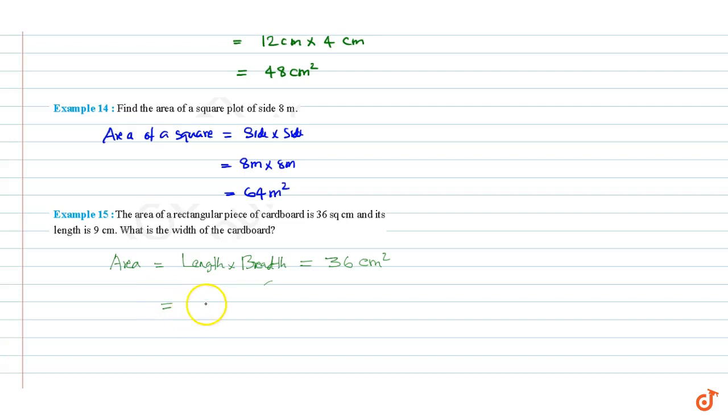Length equals 36 cm squared. Breadth equals 36 divided by 9, which equals 4 centimeters.